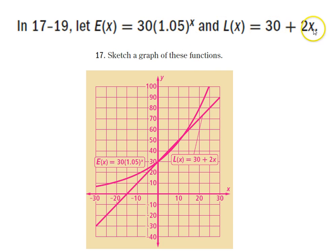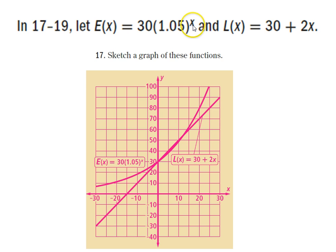When we plug 20 into L of x, we got out 70, but E of x gives about 80 — so E of x is jumping ahead. If we plug in 25, it looks like we end up somewhere around 100. So the point (25, 100) is on the curve E of x. Once we have all these points plotted, we can draw the curves.